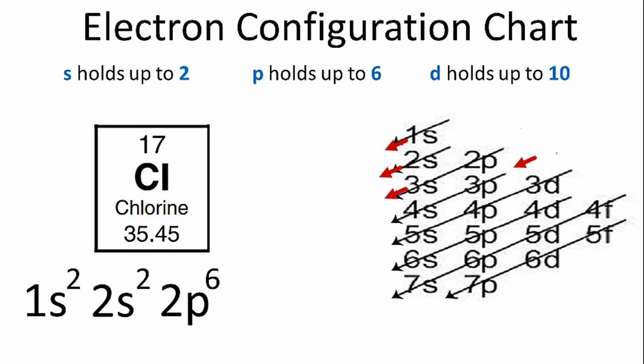In that third row there on the chart, after 2p, we have 3s. We'll put 2 in the 3s, and then we'll go to the fourth row, which starts with 3p.